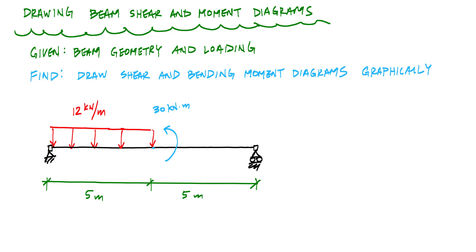Because we're given the beam geometry and loading, I have a simply supported beam pinned at A, with a roller support at B. It's got a uniformly distributed load of 12 kilonewtons per meter and a concentrated moment of 30 kilonewton-meters applied at the middle of the beam. And what we want to do is draw the shear and moment diagram.